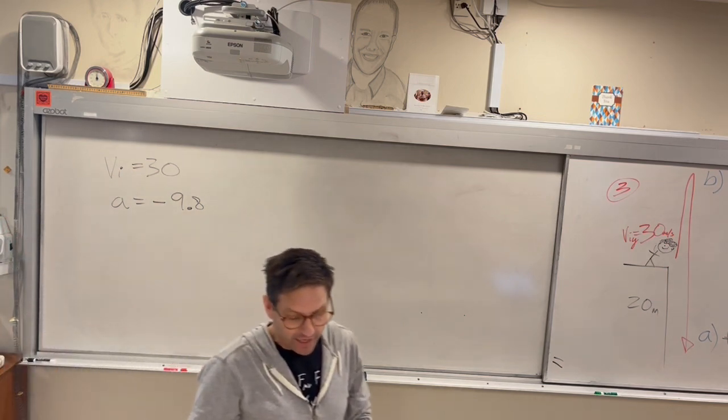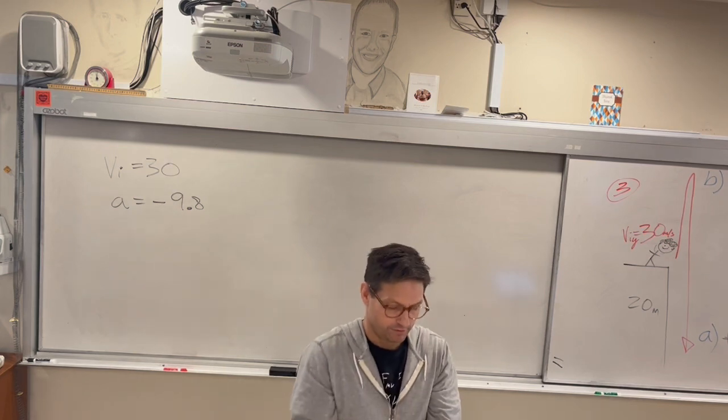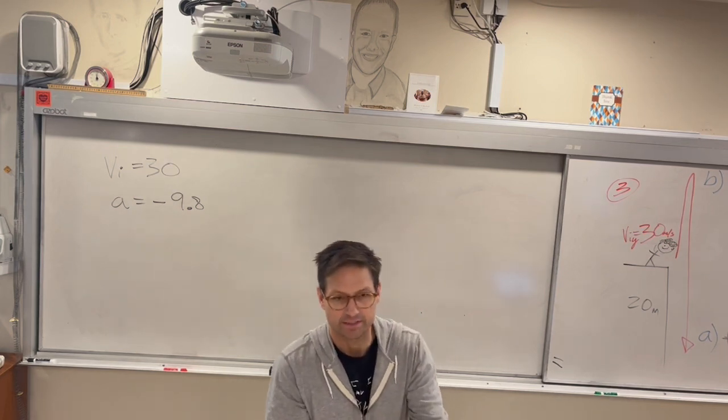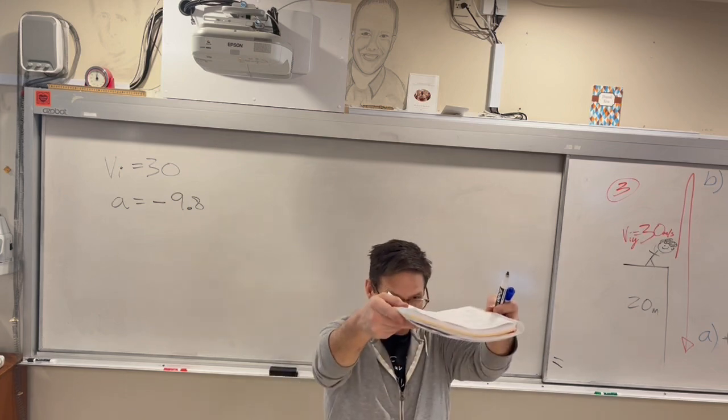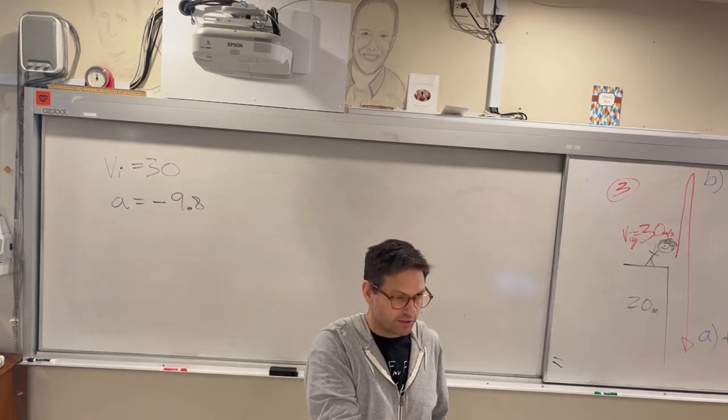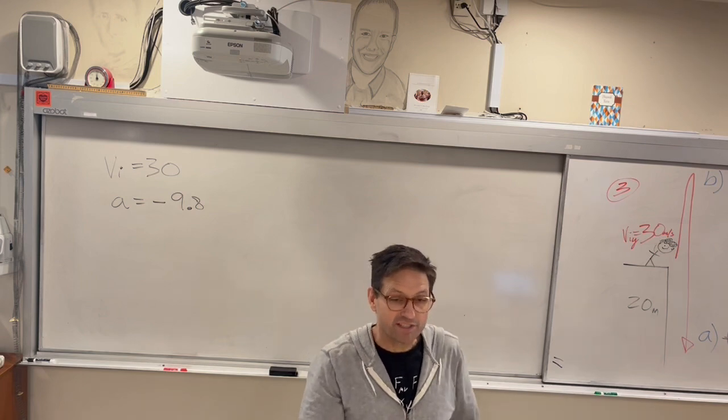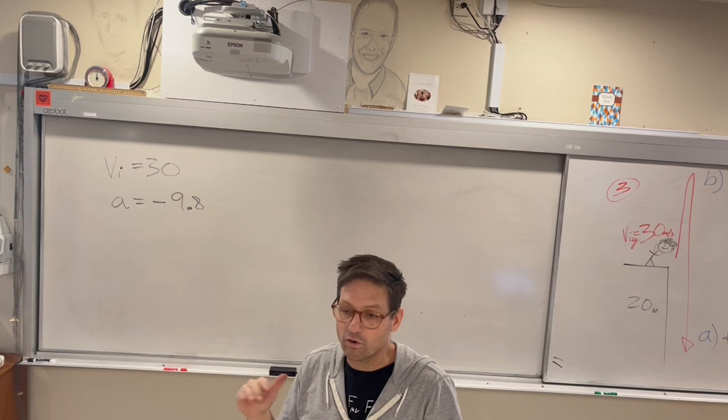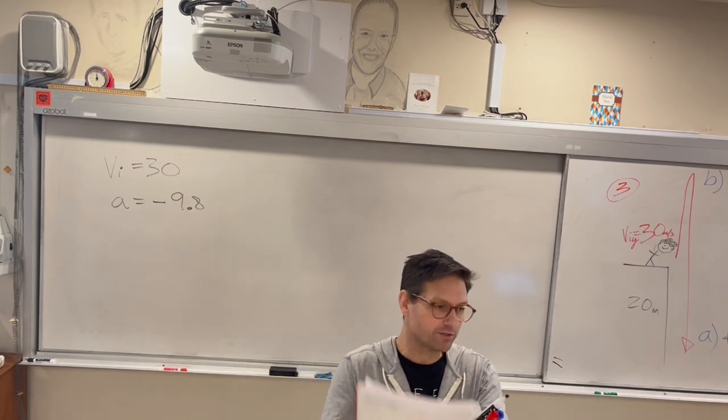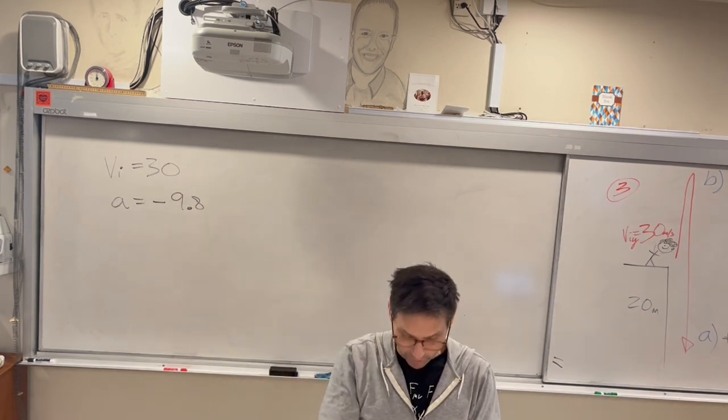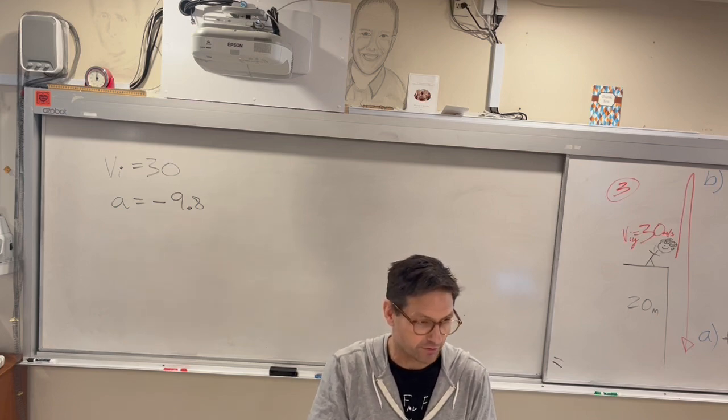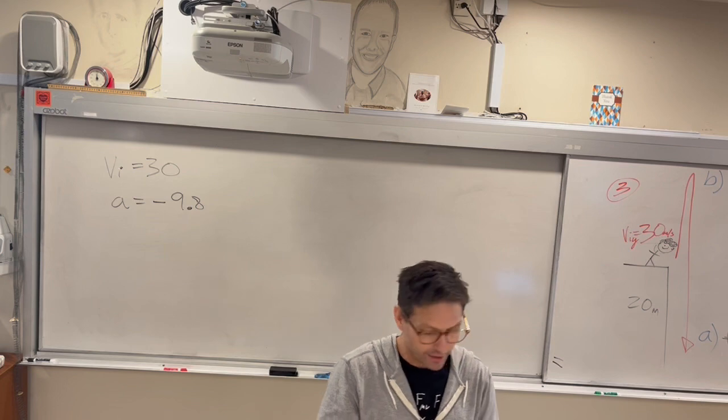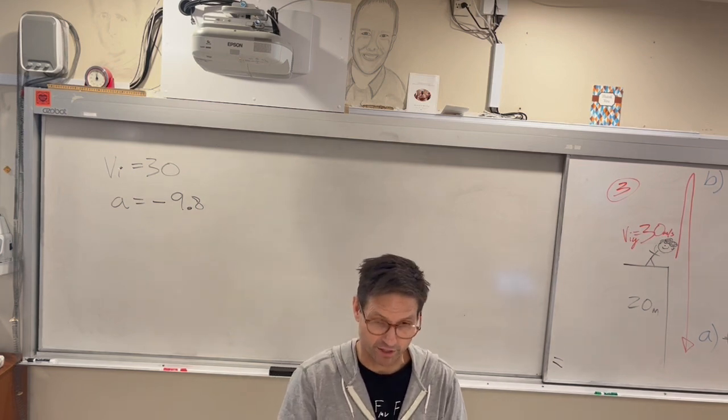If I drop this book, right now what's its velocity? Zero. But is that the VF that we would have here? No. Because I could drop this from an airplane, it's always going to end up zero on the ground, right? But in physics, we don't care about that. We care about the velocity just before it hits the ground.